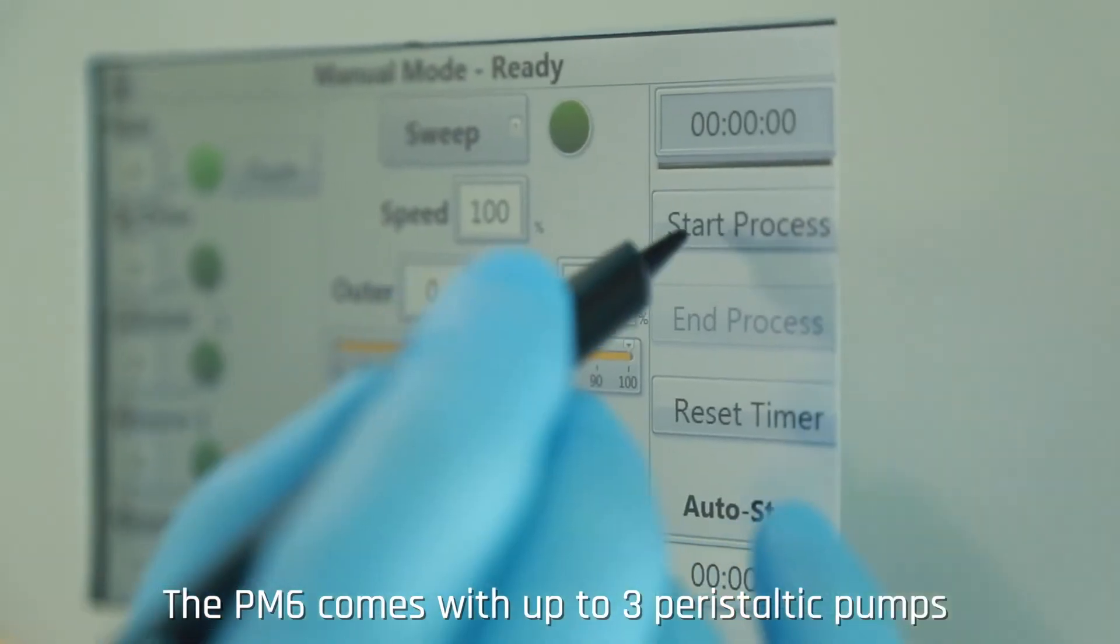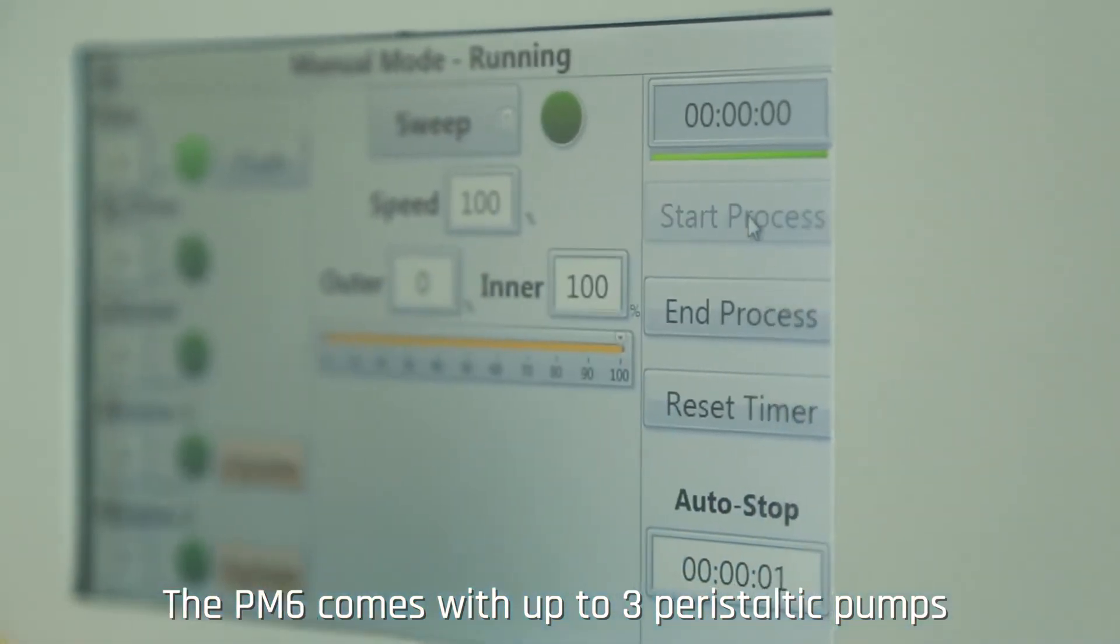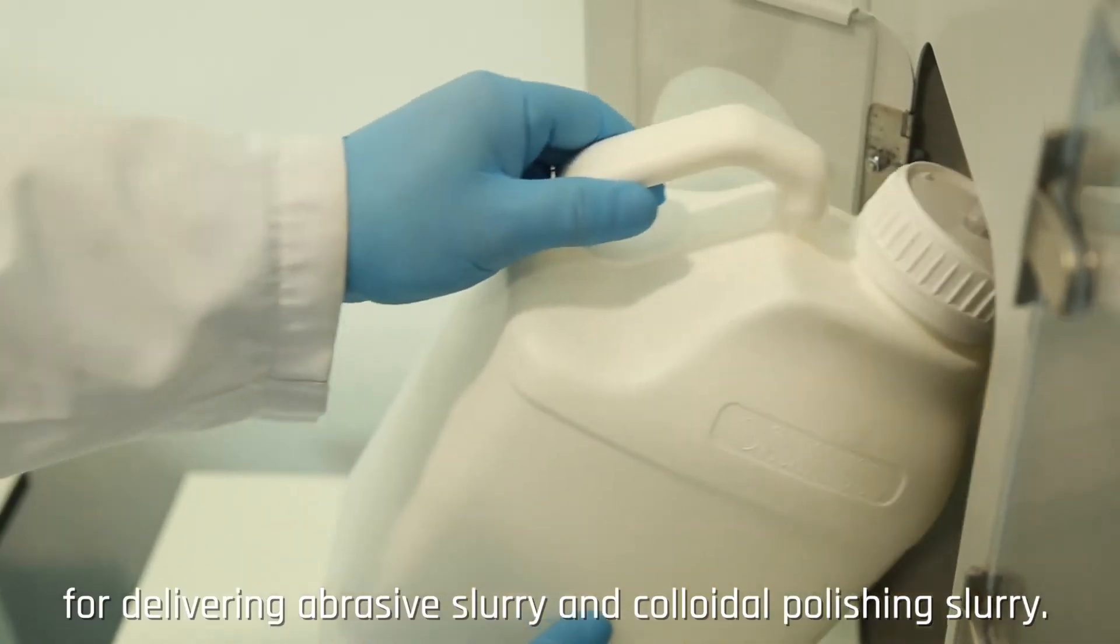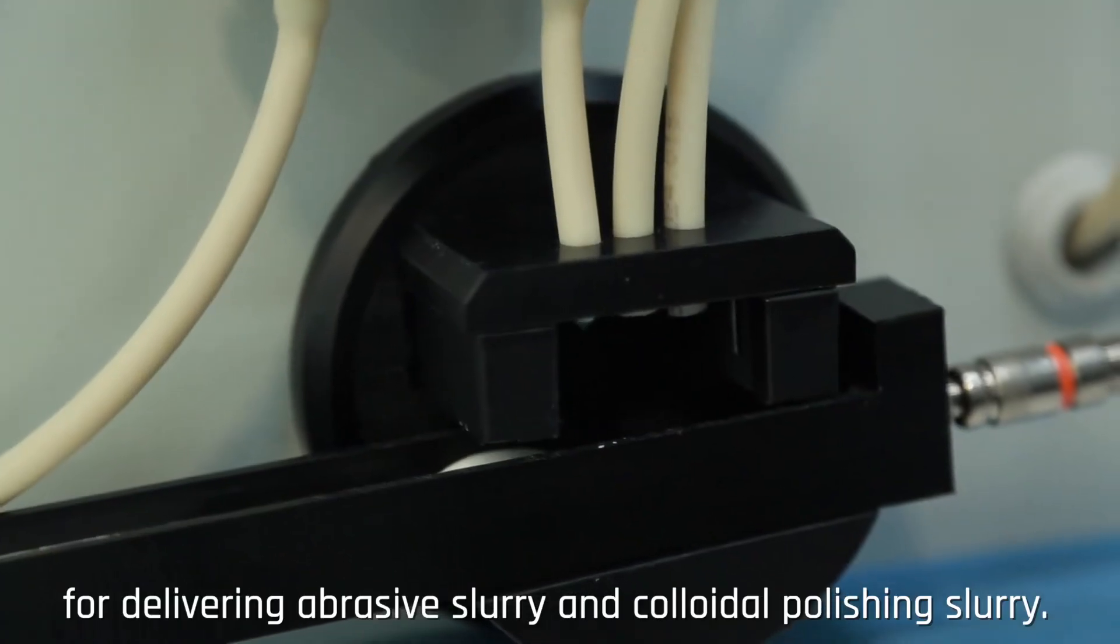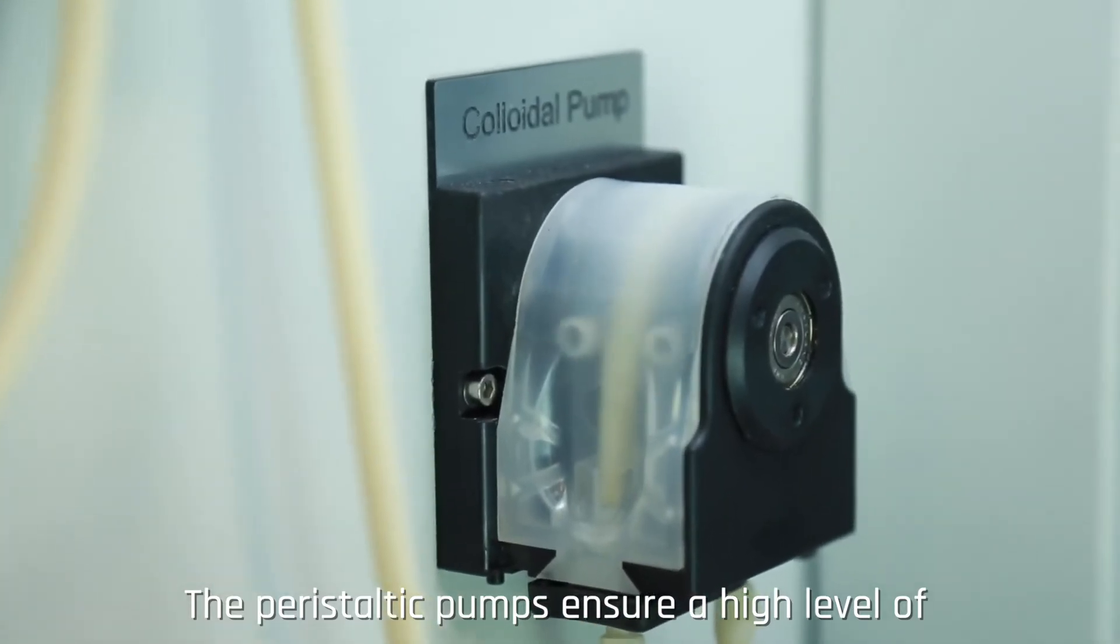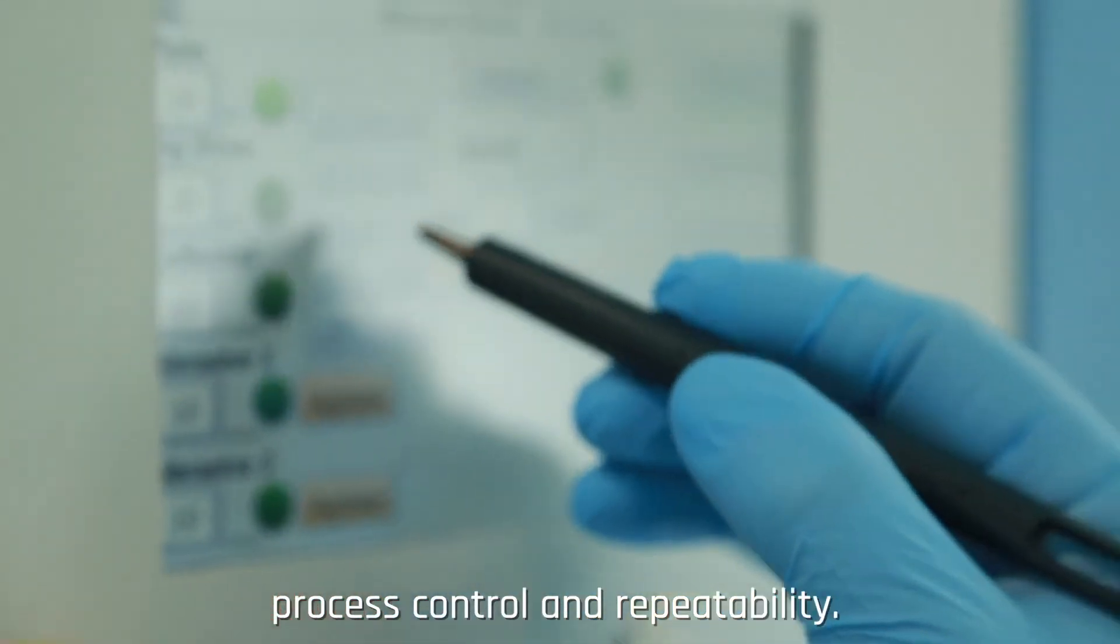The PM6 comes with up to three peristaltic pumps for delivering abrasive slurry and colloidal polishing slurry. The peristaltic pumps ensure a high level of process control and repeatability.